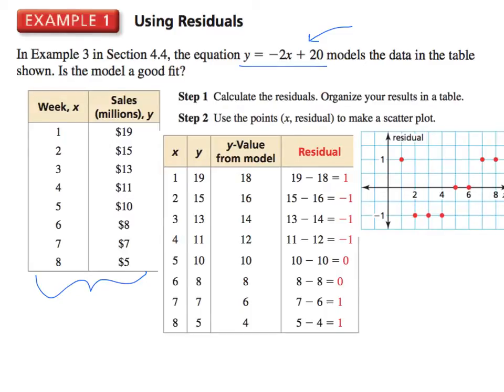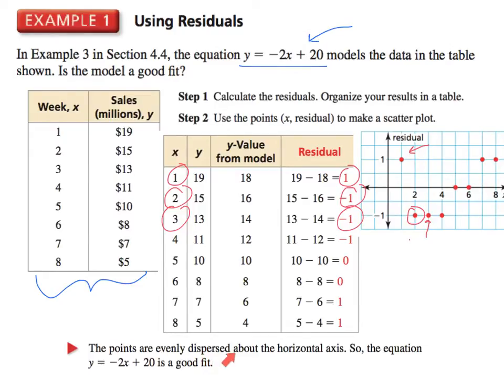We graph the residuals. That means this. We take the x value, which is from right here. We plug in 1, they're the same. And then we graph all the red dots. So we graph the point (1, 1). Here it is. Then we graph the point (2, -1). Here it is. (3, -1). Here it is. And we continue on. And we want to know, is it a good disbursement? The points are evenly dispersed about the horizontal axis. So you'll notice here, here's my horizontal axis. I have two points on, three points above, three points below. So yes, it is evenly dispersed about the horizontal axis. So the equation, y equals negative 2x plus 20, is a good fit.